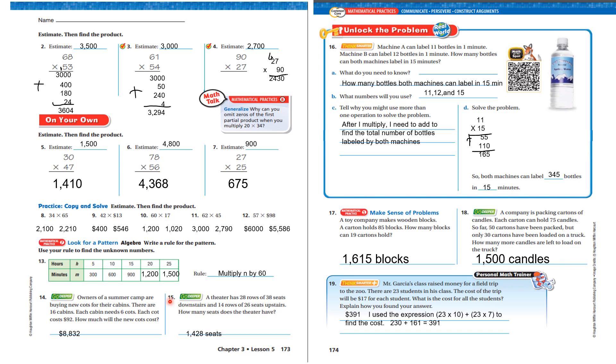A theater has 28 rows of 38 seats downstairs and 14 rows of 26 seats upstairs. How many seats does a theater have? 28 times 38. 14 times 26. Add those together and you'll get 1,428 seats.